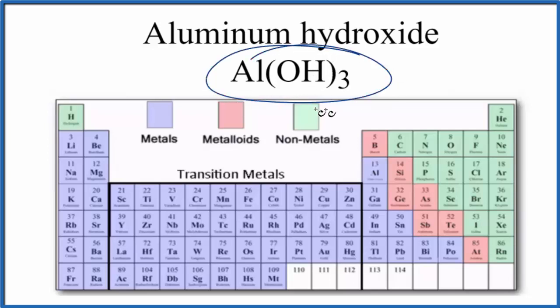The short answer is that the entire compound is an ionic compound. But within this compound, we have these hydroxide ions. We have three of these hydroxide ions, and each one of those has a covalent bond between the oxygen and the hydrogen.